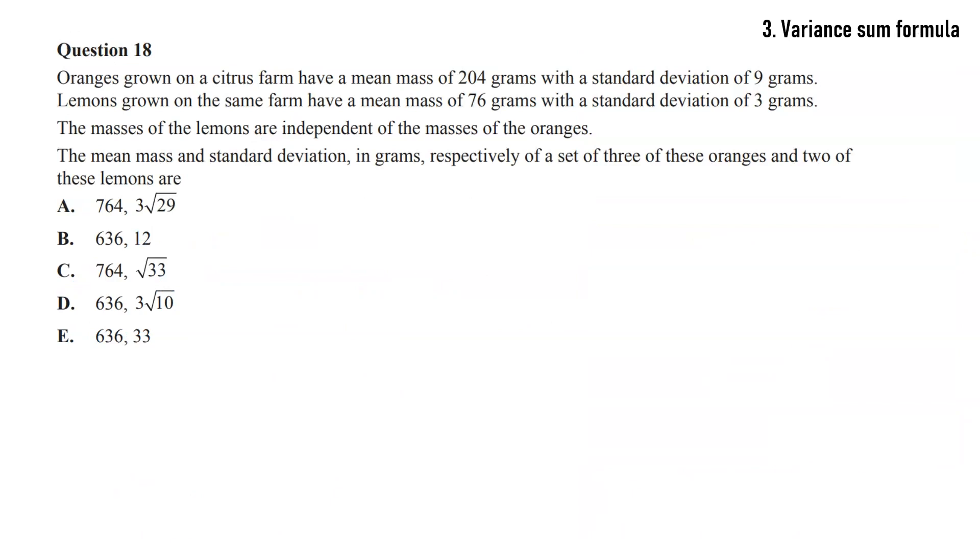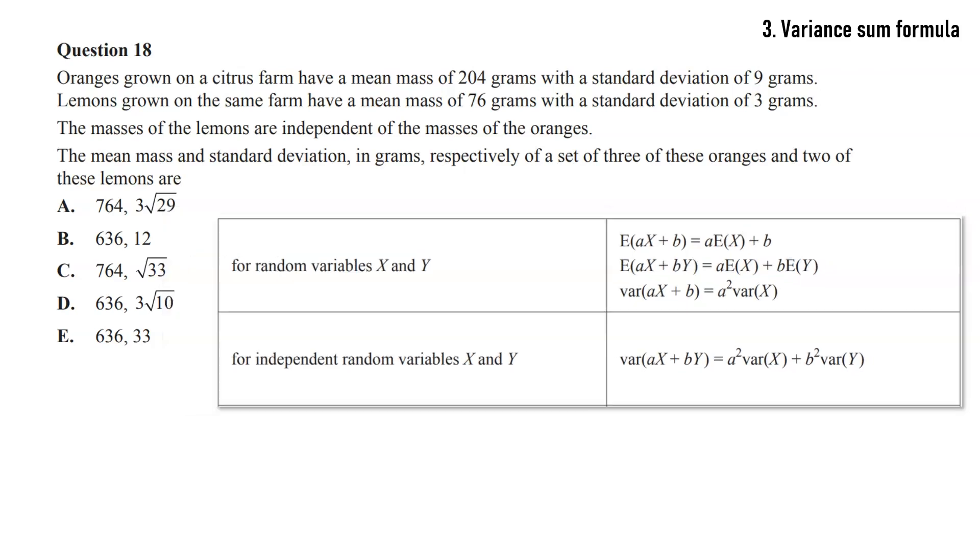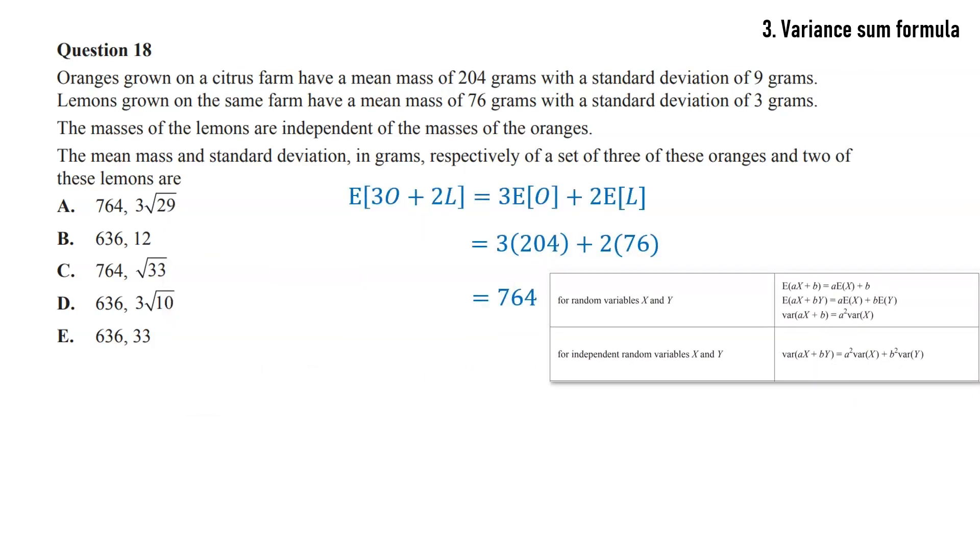In this question, we have the random variables are masses of oranges and lemons. We're given the mean and standard deviation and we were asked about the mean and standard deviation for three oranges and two lemons. So we have these formulas from our formula sheet and we can use them. The mean is just as you would think, we just take the mean mass of the orange times it by 3, the mean mass of the lemon times it by 2, and we get our mean total mass. But for the variance, the formula says a² times variance of x plus b² times variance of y. But that's not what we want here.